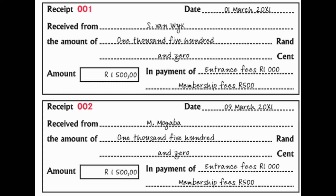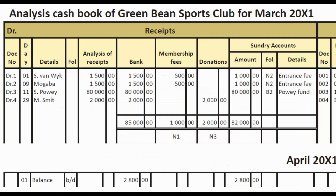Receipt number two: we received $1,500 from M Mugaba. The entry is exactly the same as the previous one. On the debit side of the cash book under receipts, enter his name — Mugaba. Analysis $1,500, bank $1,500, membership fees $500, sundry accounts $1,000, and the detail is 'entrance fee.'